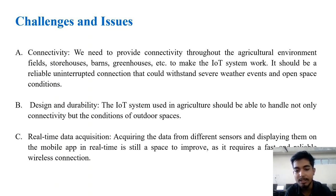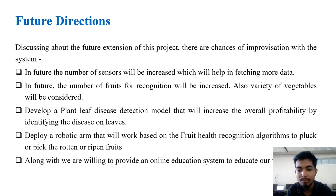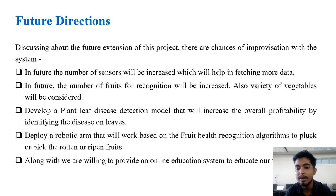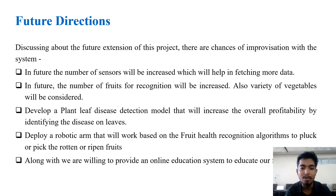The challenges and issues faced include connectivity issues, design and durability issues, and challenges in real-time data acquisition. For future directions, we plan to increase the number of sensors to fetch more data, develop a plant leaf disease detection model to increase overall profitability, and deploy a robotic arm that works based on fruit health recognition algorithms to pluck or pick rotten and ripened fruits.